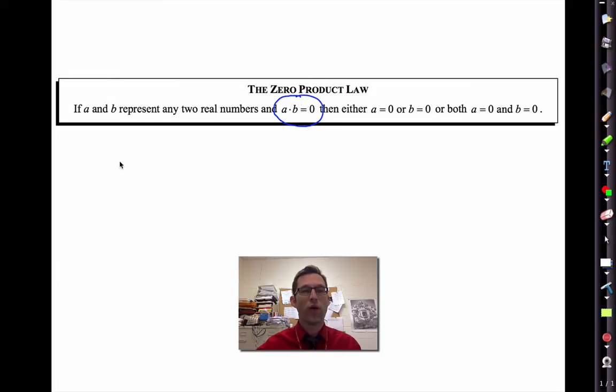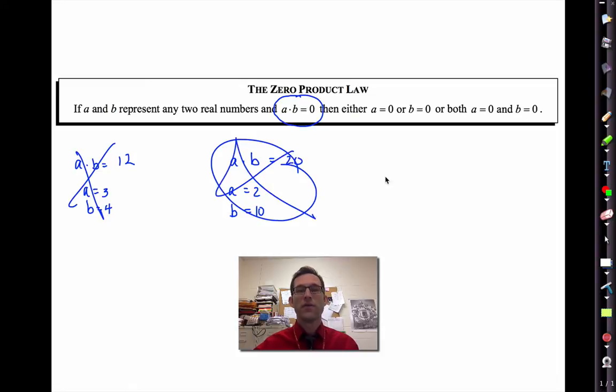There is no 12 product law. If a times b is equal to 12, a doesn't have to be 12, b doesn't have to be 12. But if I know that two or more things in a product are equal to 0, then either a is equal to 0 or b is equal to 0 or c is equal to 0. Notice that word or, it's not an and issue, it's that at least one of them does.